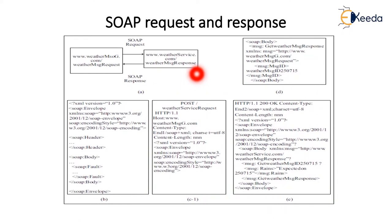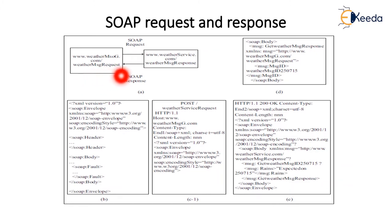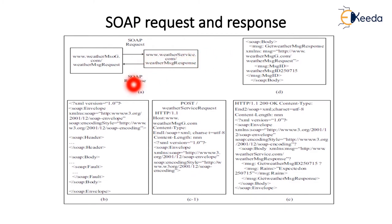We are going to take an example to explain the structure and usage of SOAP using the request-response method, taking the response to give the weather status or weather report. Here, the SOAP request is given by the HTTP URL www.weathermessage.com. The weather message request is initiated by the client, after which the SOAP request is transferred to the response — weather service dot weather message response. After that, the response is given based on the request. Here the SOAP body message element is the get weather message response, and it is using XML language for processing the messages.